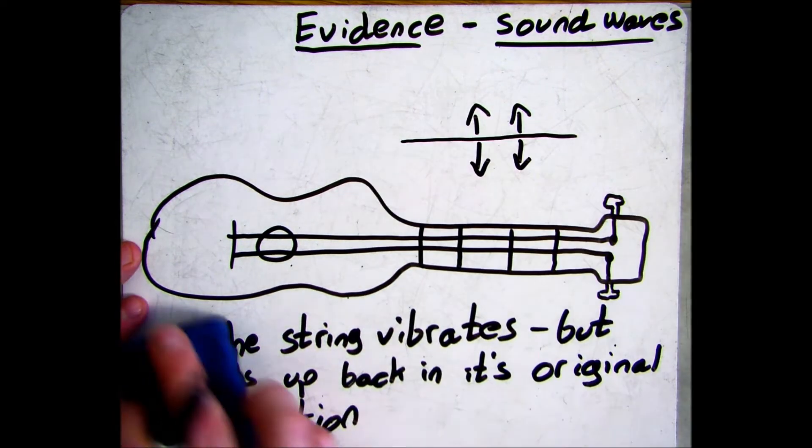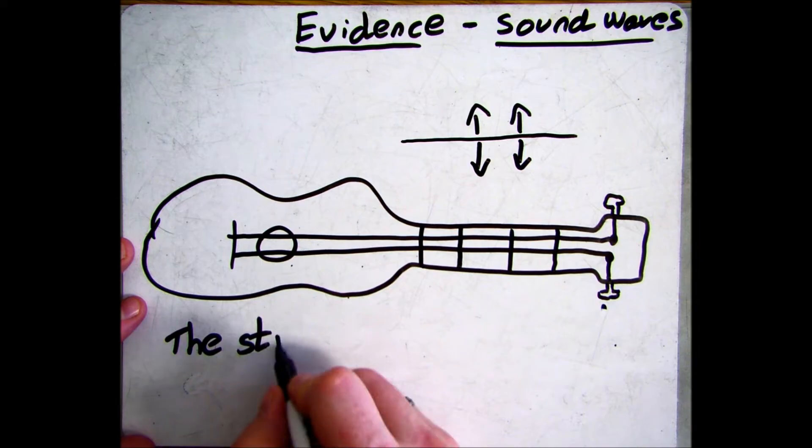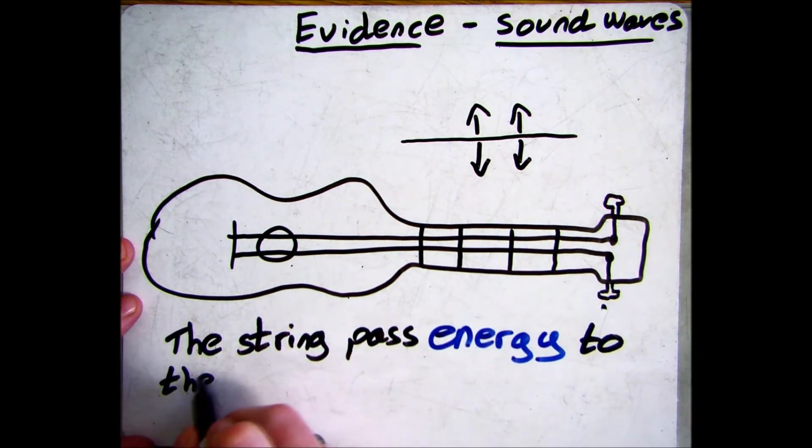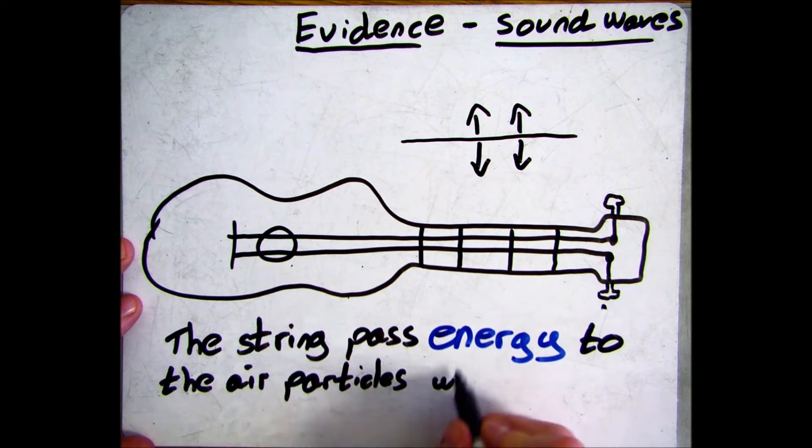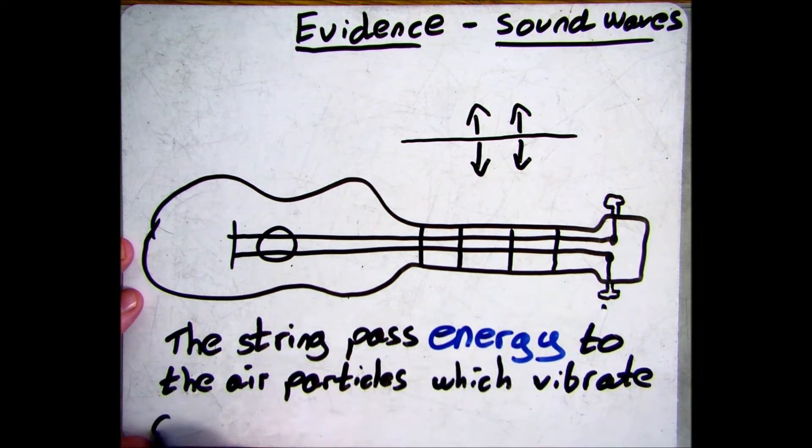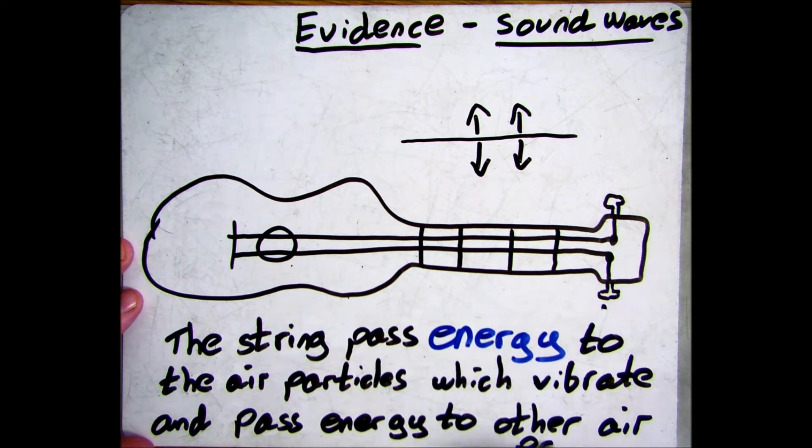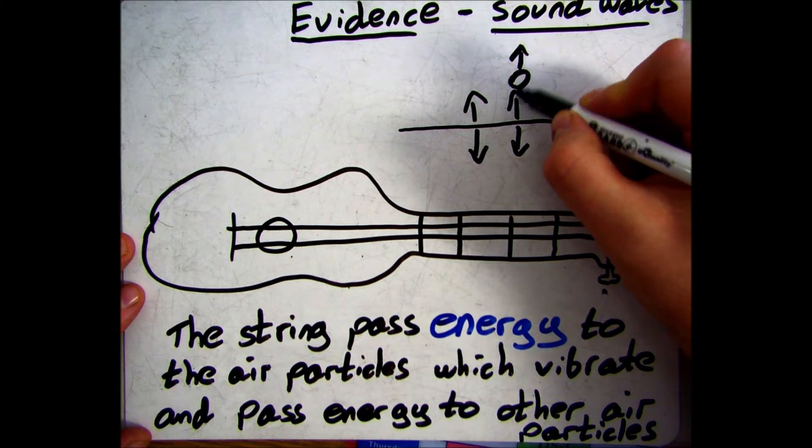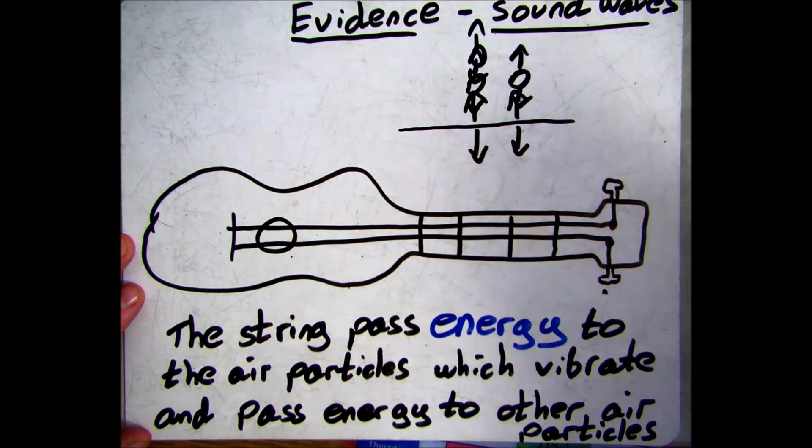As the surrounding air particles have energy transferred to them, it will cause them to vibrate up and down. This vibrational energy will be passed on to the surrounding air particles, causing those to vibrate and pass energy on to the next air particles.